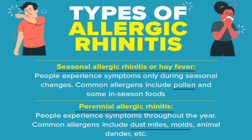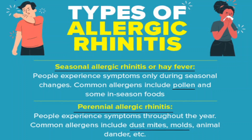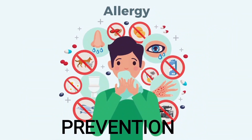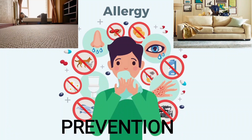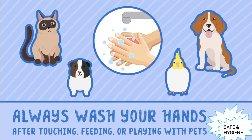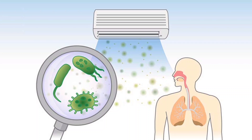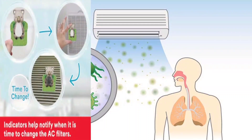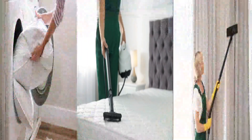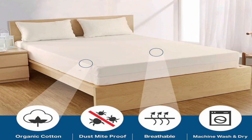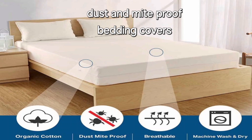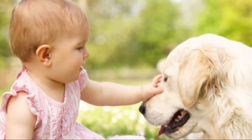Perennial allergic rhinitis is commonly seen in younger children. Prevention always focuses on avoiding specific allergens, which includes not having pets, carpets, or upholstered furniture at home, always washing hands immediately after handling pets, keeping the home dry, and using air conditioning to decrease allergens in the air. Regularly cleaning pillows, beds, and curtains, and using dust and mite-proof bedding covers have proven effective. Exposure to animals early in life might also reduce the risk of developing these allergies.